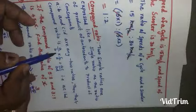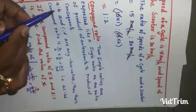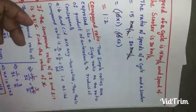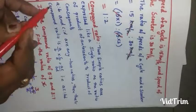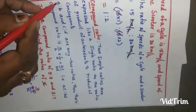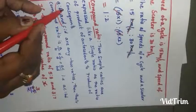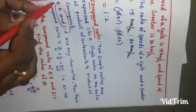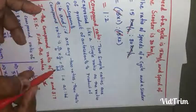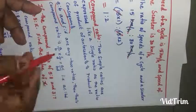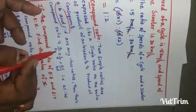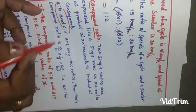In the compound ratio, we multiply antecedent into antecedent — that is, first term into first term — and consequent into consequent — second term into second term. So first term into first term gives a into c, and second term into second term gives b into d. This can be written in both fractional form and ratio form.